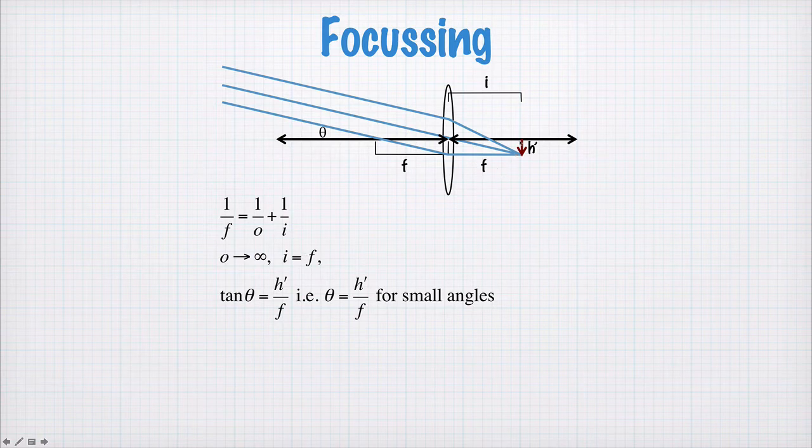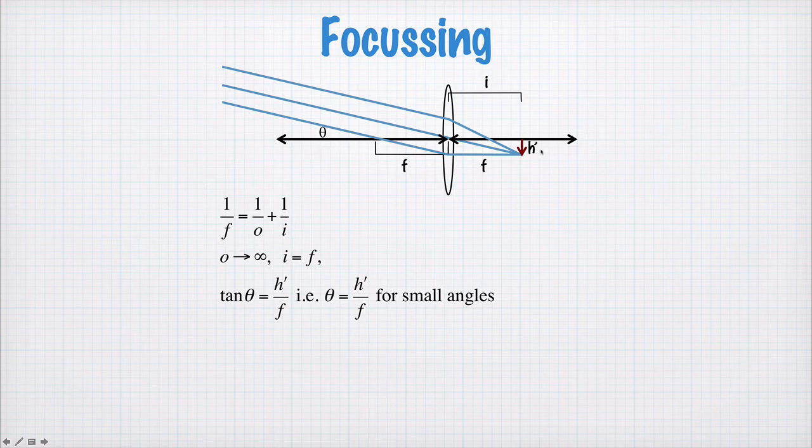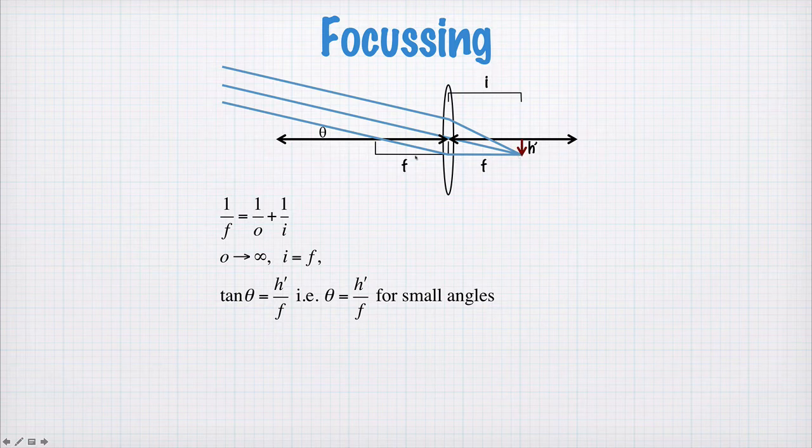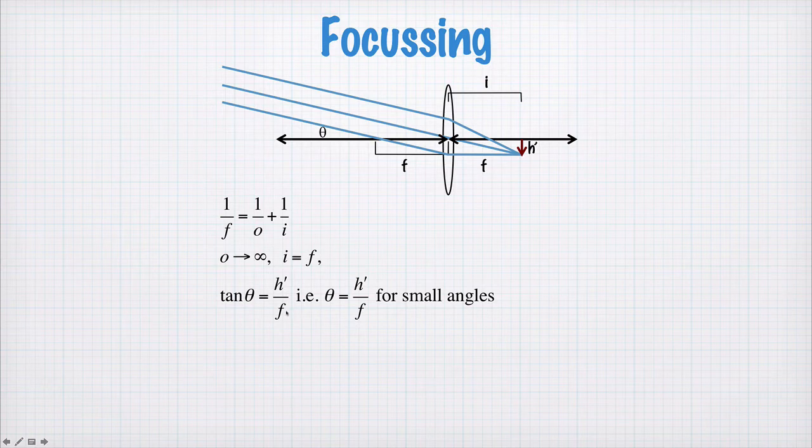The distance from the optical axis at which this focusing occurs is h', so that's how far off the center of the optical axis you are. We can find h' by constructing a triangle with h' and f and then this angle θ, so that tan θ is equal to h' over f. Well for small angles, θ is approximately equal to h' over f.